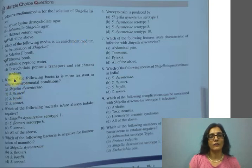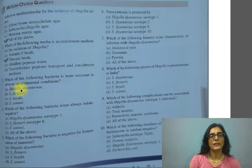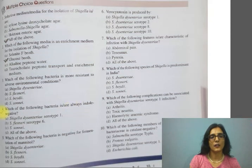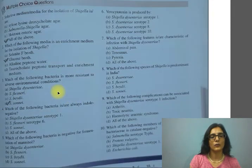Next question: which of the following bacteria is more resistant to adverse environmental conditions? Option A is Shigella dysenteriae, B is Shigella flexneri, C is Shigella boydii, and D is Shigella sonnei. The correct option is D, Shigella sonnei.